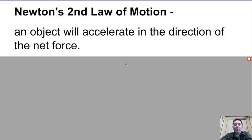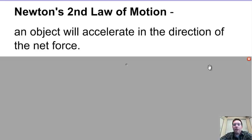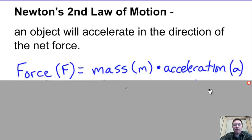Today we're going to walk through Newton's second law and the equation associated with it, and solve for each of the different variables. Newton's second law of motion basically says that an object accelerates in the direction of a net force — so if I push on an object, it's going to accelerate in the direction that it is pushed.